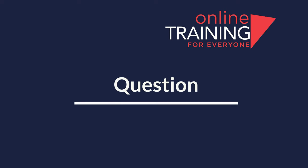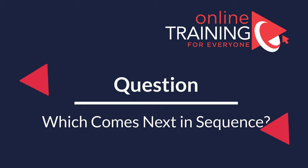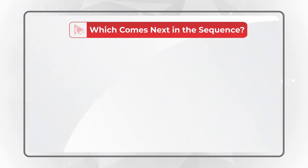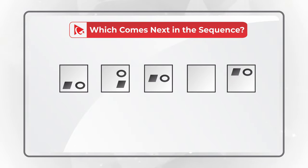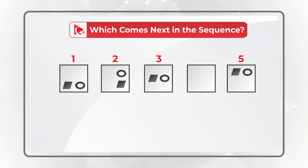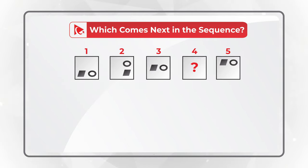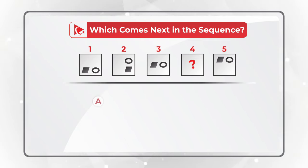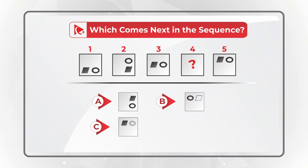I love this question because it really makes you think in order to get to the correct solution. You need to determine which shape comes next in the sequence. You're presented with a series of five shapes. Squares 1, 2, 3, and 5 have other smaller shapes inside. You need to determine shape 4. You have four different choices: A, B, C, and D.